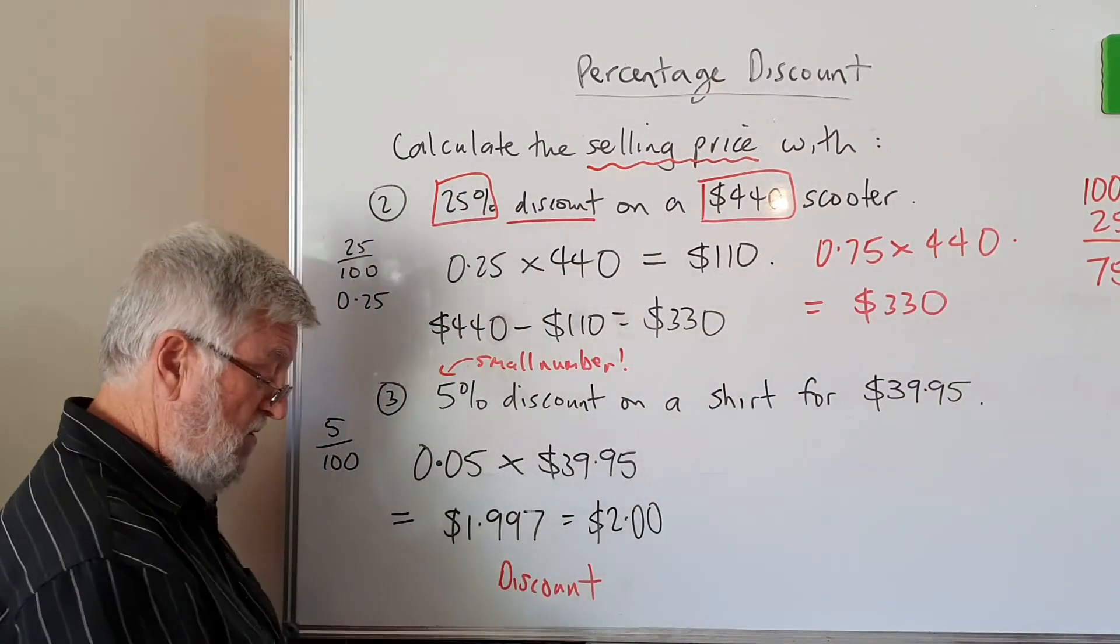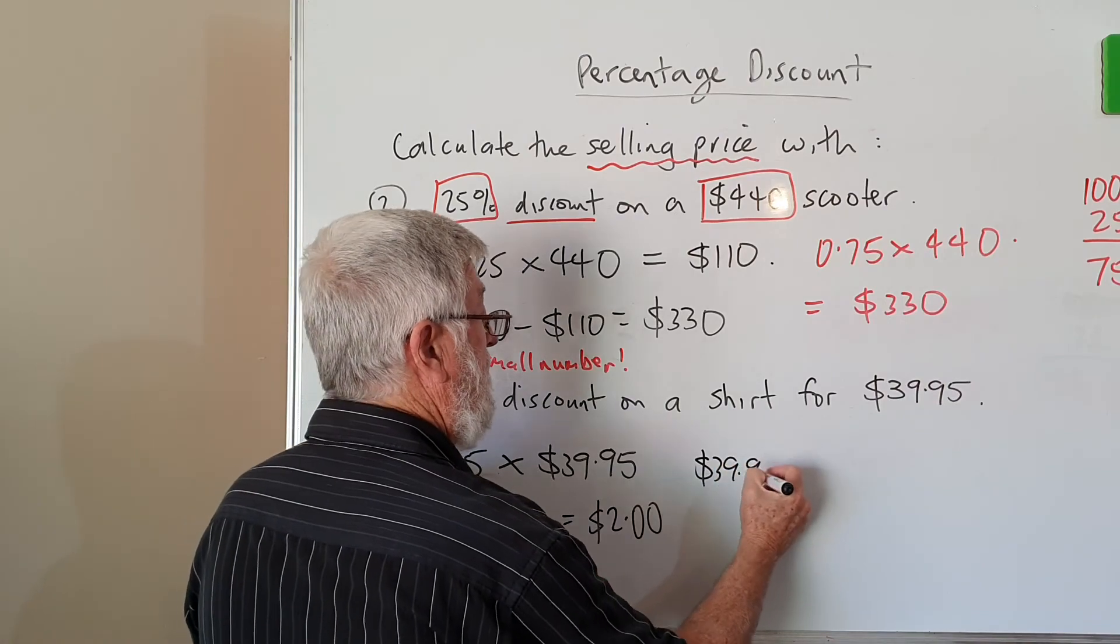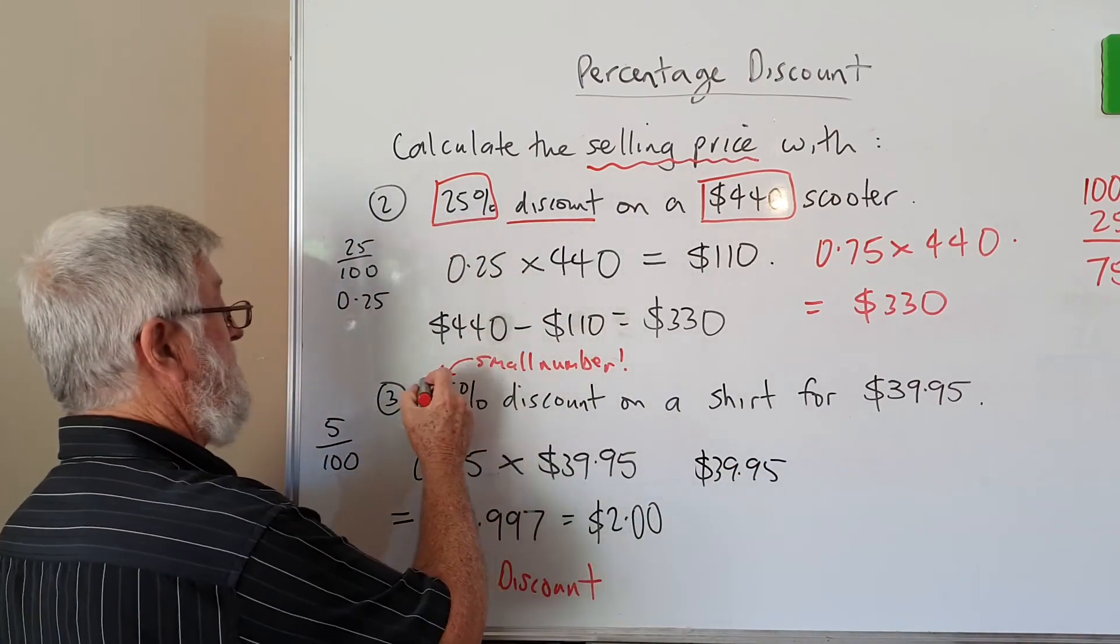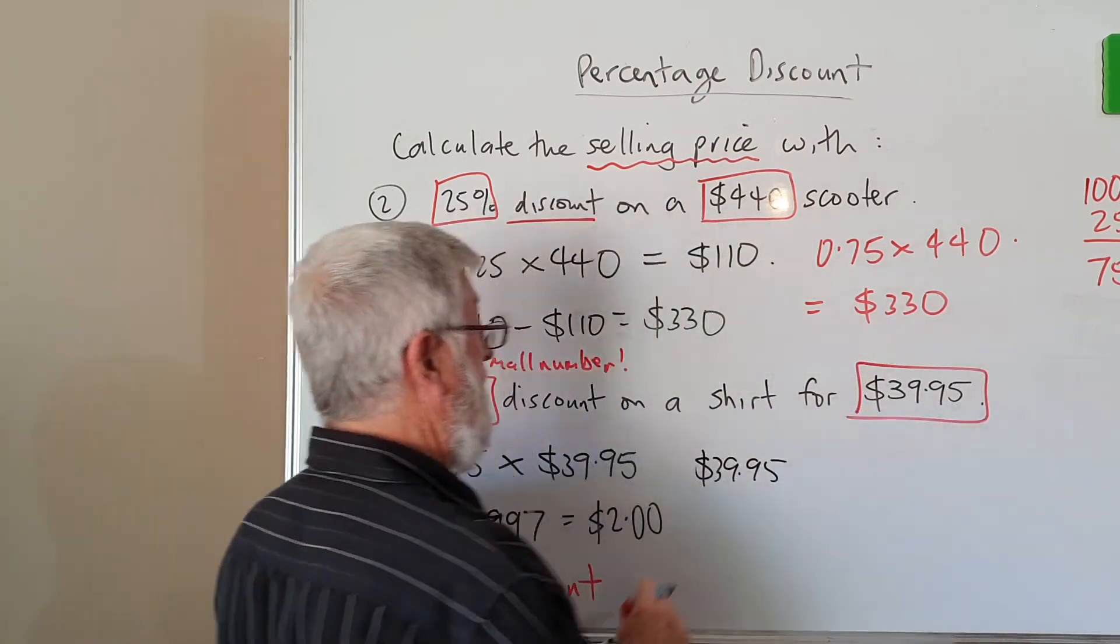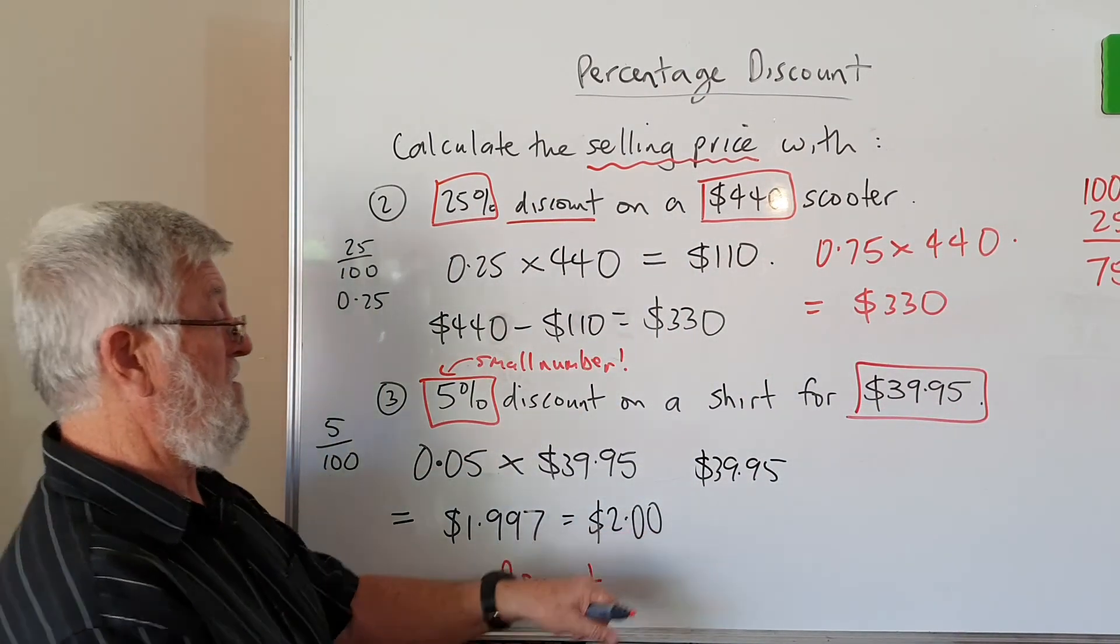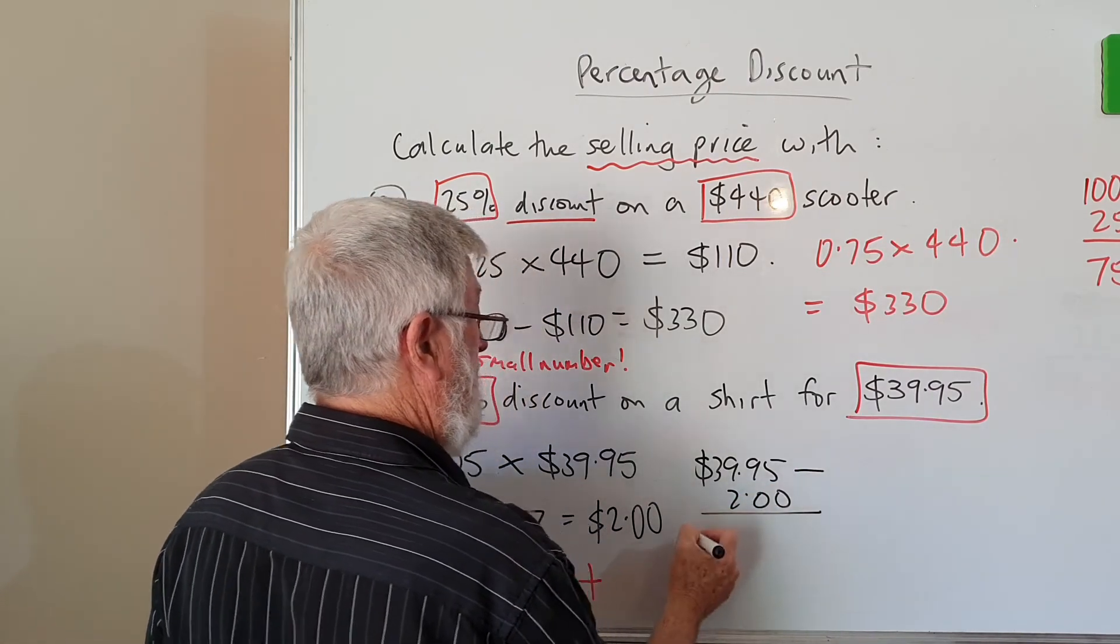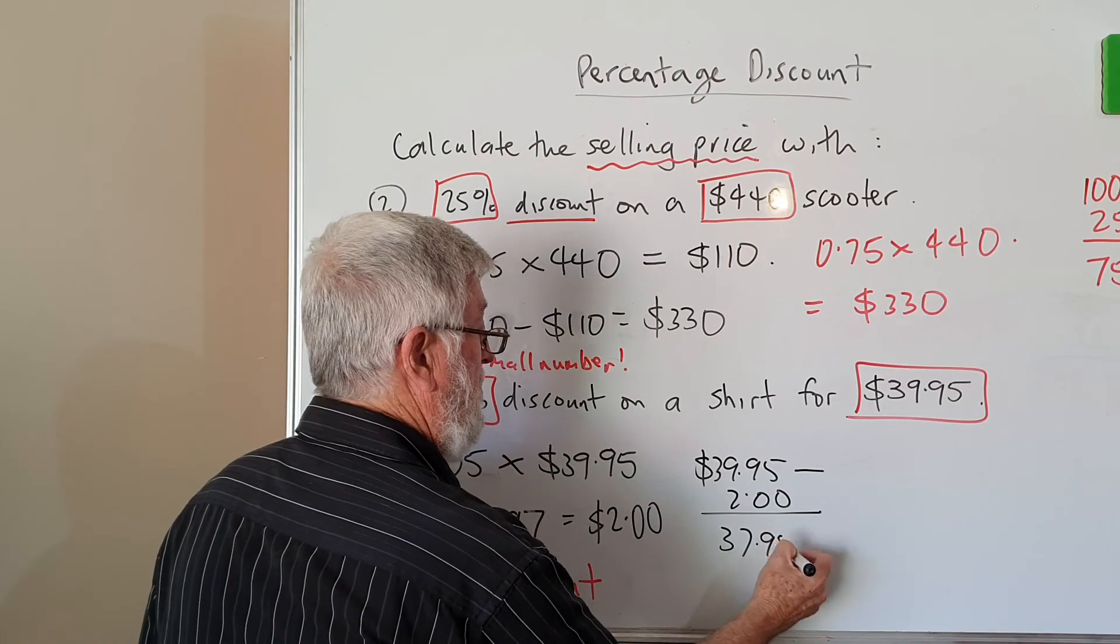Let's have a look at them. The discount is $2. So what's going on? I had $39.95. So there's my two numbers, the 5% and the $39.95. When I calculate the discount, what do I do with it? I subtract it. So I'm going to subtract the $2 and I end up with $37.95.